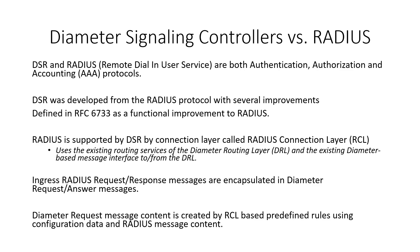Diameter Signaling Controllers versus Radius: Diameter and Radius are both authentication, authorization, and accounting protocols. DSR was developed from the Radius protocol with several improvements defined in RFC 6733 as a functional improvement to Radius. Radius is supported by DSR through a connection layer called the Radius Connection Layer, which uses the existing route services of the diameter routing layer and the existing diameter-based message interfaces to and from the DRL.